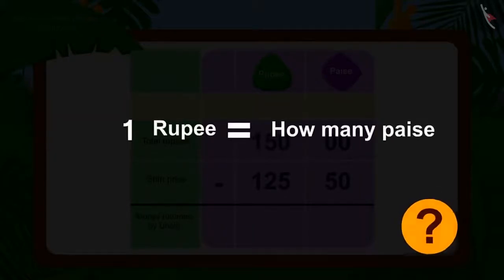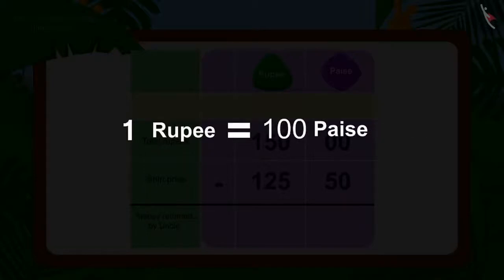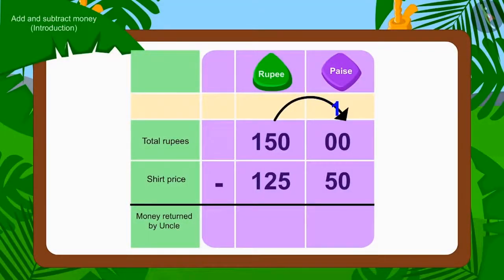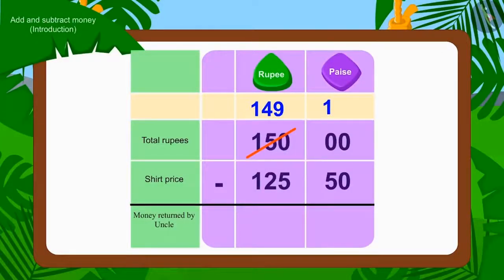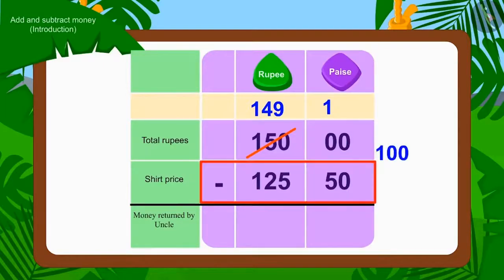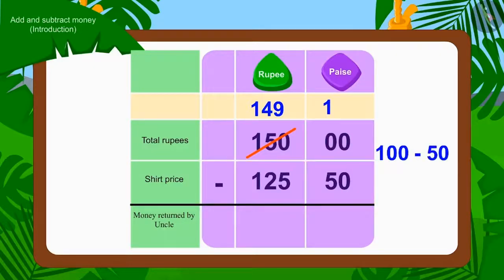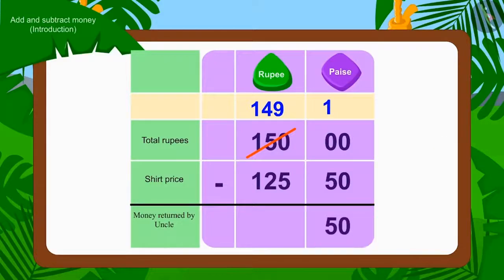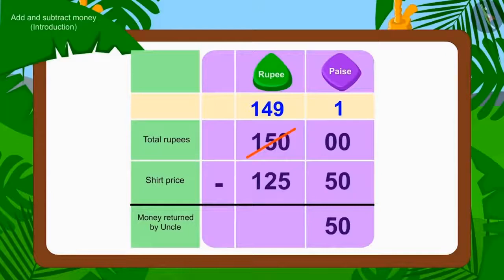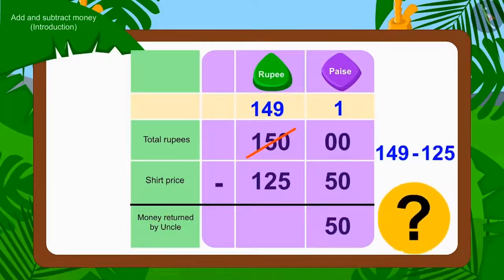How much is 1 Rupee worth? 100 paise. We will borrow 1 Rupee out of Rs. 150. We will show it by changing Rs. 150 to Rs. 149. Now, if we subtract 50 Paise of Rs. 125.50 from the borrowed 100 Paise, then how many Paise are left? That's right — 50 Paise. Now we will subtract the number of Rupees: Rs. 149 minus Rs. 125.